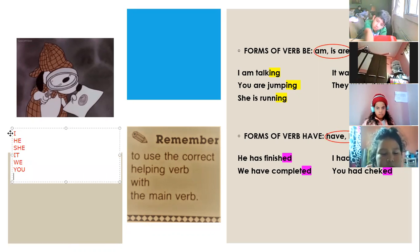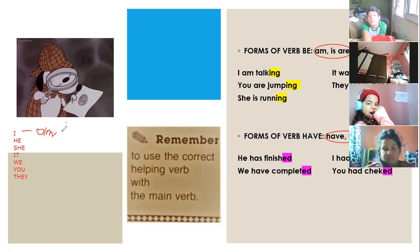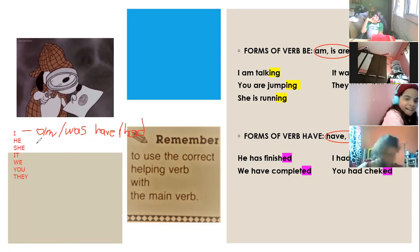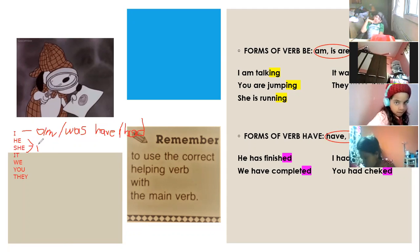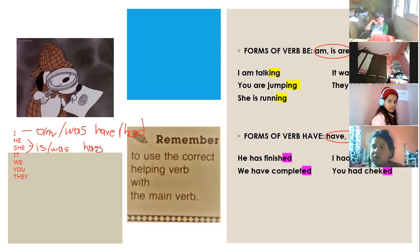You use different forms of 'be' or 'have' depending on the subject. Look at these pronouns: I, he, she, it, we, you, and they. For 'I' in the past, you use 'was.' For 'have' in the past, the past tense is 'had.' For 'he,' 'she,' and 'it,' we use 'has' in the present, not 'have.' Past tense is 'had.'